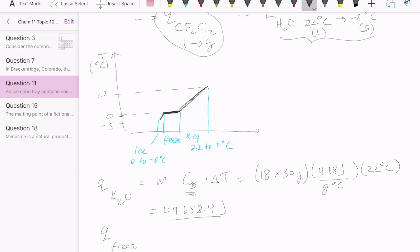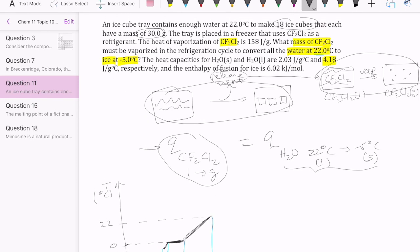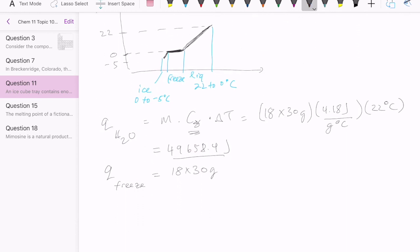The second step is we need the heat that's released when the water freezes to ice. To do that, I just need the quantity of ice I have, which is 18 times 30 grams. And then multiply by the heat of fusion or the enthalpy of fusion, 6.02 kilojoules per mole. Since it's given as units of mole, I'm going to have to convert my mass to moles.